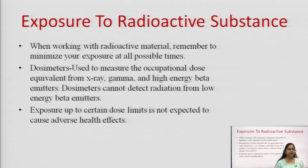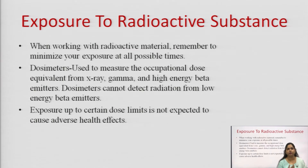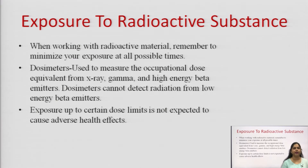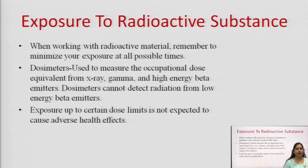There are dosimeters which are used to measure the occupational dose. People who are working with radioactive material wear dosimeters on particular areas of their body to measure their daily radiation exposure. These dosimeters are equivalent for x-rays, gamma rays, and high energy beta emitters, but they cannot detect radiation from low energy beta emitters.